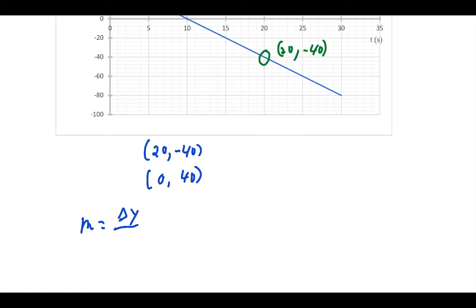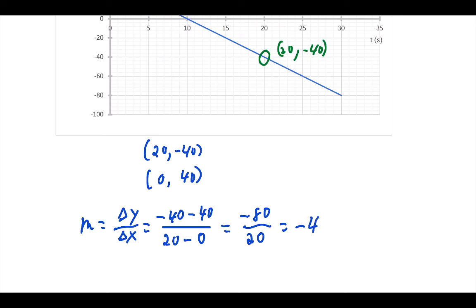Slope, change in the y axis over the change in the x. So the final y value is that negative 40 minus the initial y value, which was positive 40, over my final x value, which was 20, minus my initial x value, which was 0. That gives me negative 40 minus 40 is negative 80 over 20, which gives me negative 4. That's my numerical value. Now I've got to look at my units.